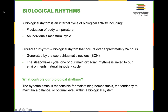We're going to begin by talking about biological rhythms. We all have a particular biological rhythm that we share, and that's our circadian rhythm. This biological rhythm lasts over the course of 24 hours, giving us a sleep-wake cycle generated in our brain by what's known as the suprachiasmatic nucleus, or the SCN. Another thing that helps control our biological rhythms is the hypothalamus, which maintains homeostasis and keeps us at an optimal level.